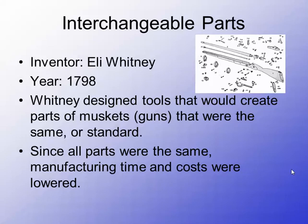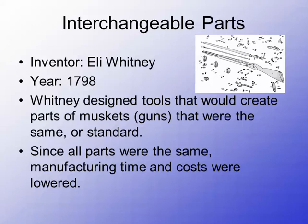Another invention by Eli Whitney was something called interchangeable parts. Four years later, in 1798, Whitney designed tools that would create parts of muskets — guns at the time — that were the same or standard. So instead of having a gunsmith make a custom musket every time, each part would be interchangeable. If one part broke, you could replace just that standard piece rather than custom making a brand new musket. Since all the parts were the same, manufacturing time and costs were lowered — quicker to build, cheaper to build.